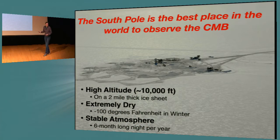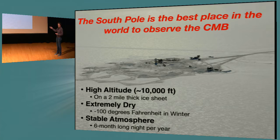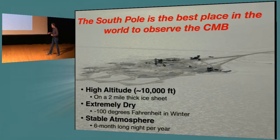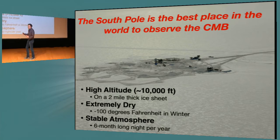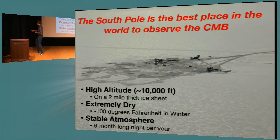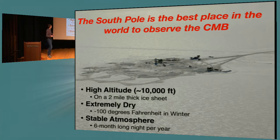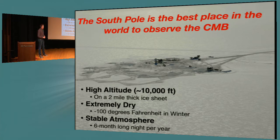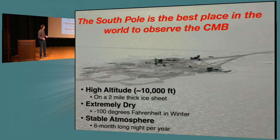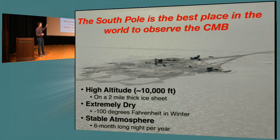Another surprising fact about this microwave background is that the best place to observe it in the world is from the South Pole, due to its unique conditions. It's high altitude — you're on a two-mile thick ice sheet. But what really makes it unique is that it's extremely dry, because in the winter when the air gets to be minus 100 degrees Fahrenheit, it literally cannot hold much water vapor. In addition, it's a very stable atmosphere — you're at the axis of the Earth, so there's a six-month-long day followed by a six-month-long night, and the atmosphere is not churned up by that daily rising and setting of the sun. During that six-month-long winter, the atmosphere is extremely stable, making it a really unique place to do these observations of the microwave background from the Big Bang.